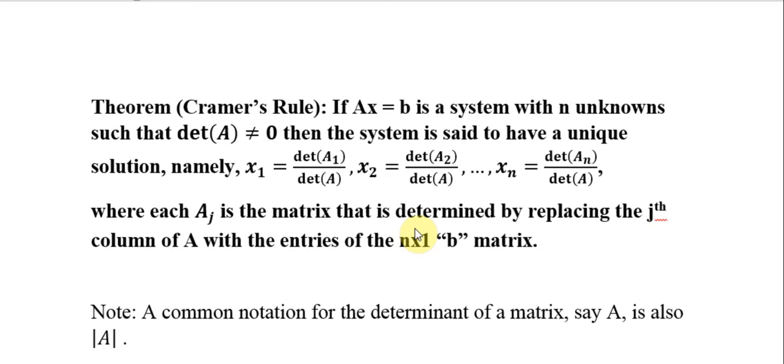Now, in the numerators, A sub j is the matrix that is determined by replacing the jth column of the matrix A with the entries over in B. B is that n by 1 matrix.